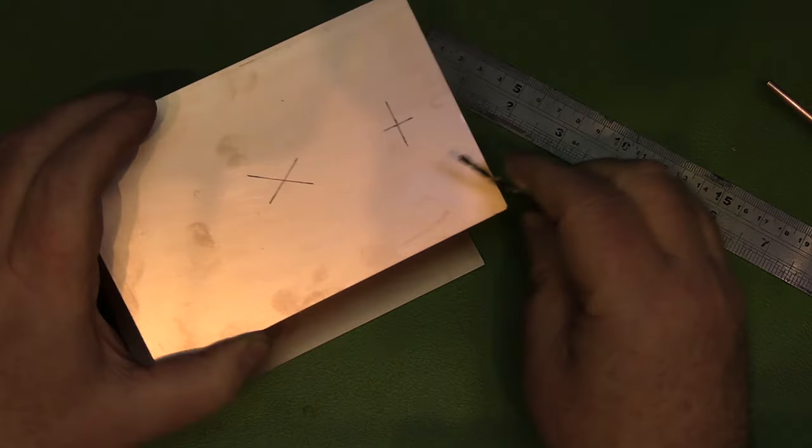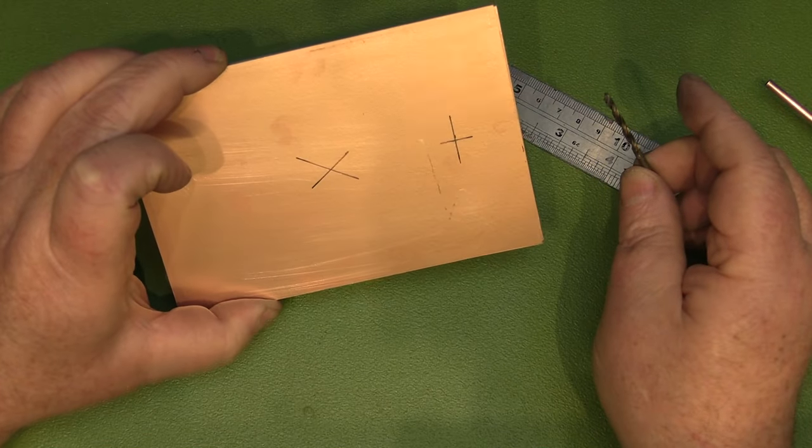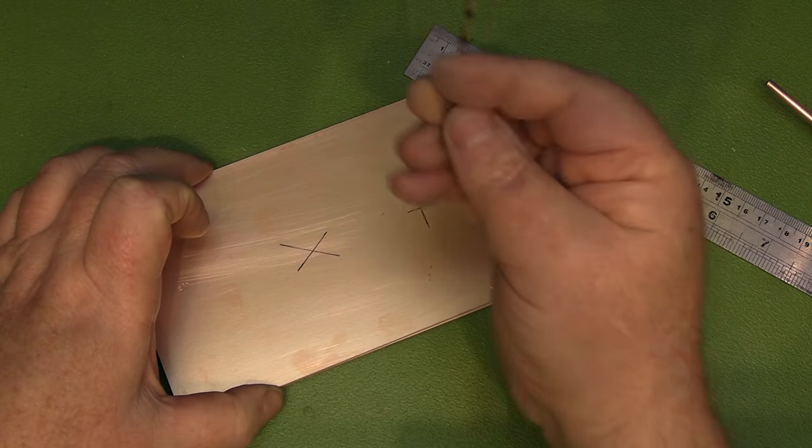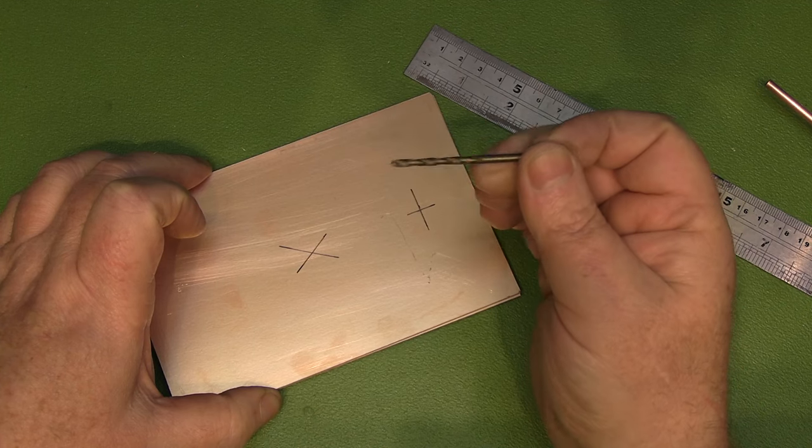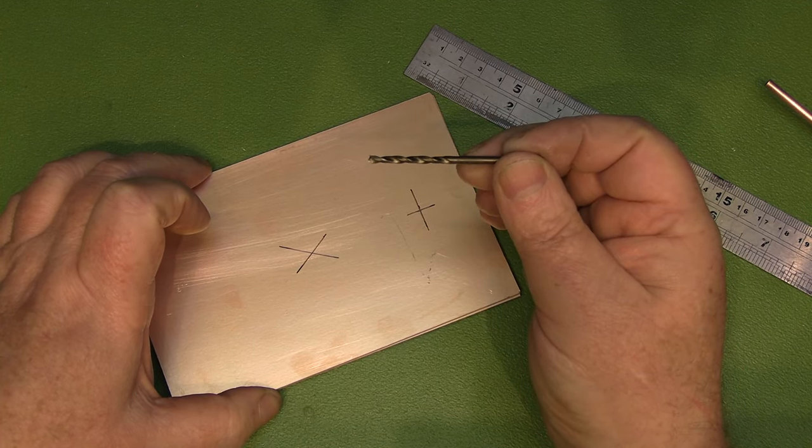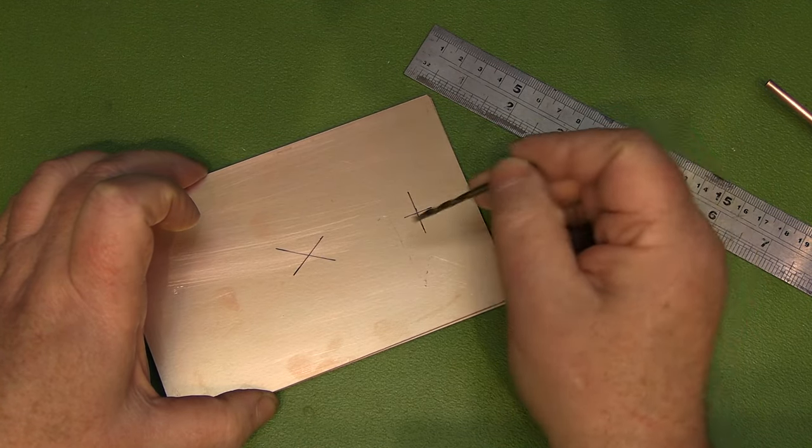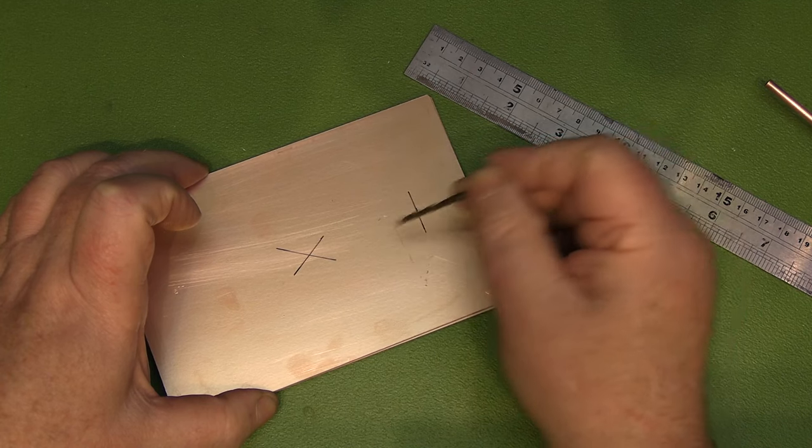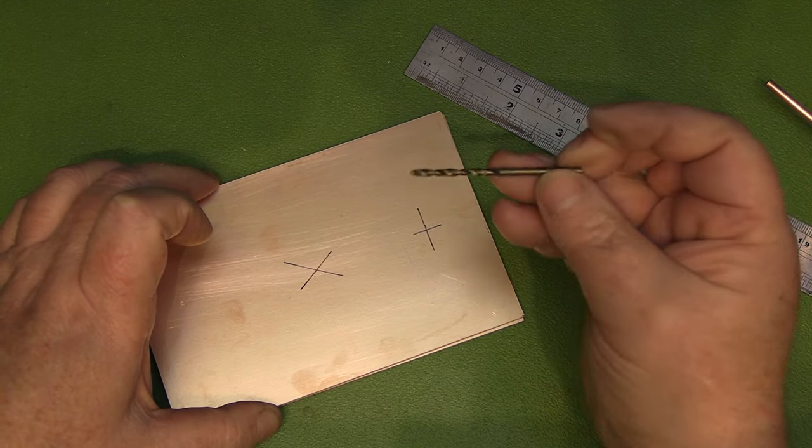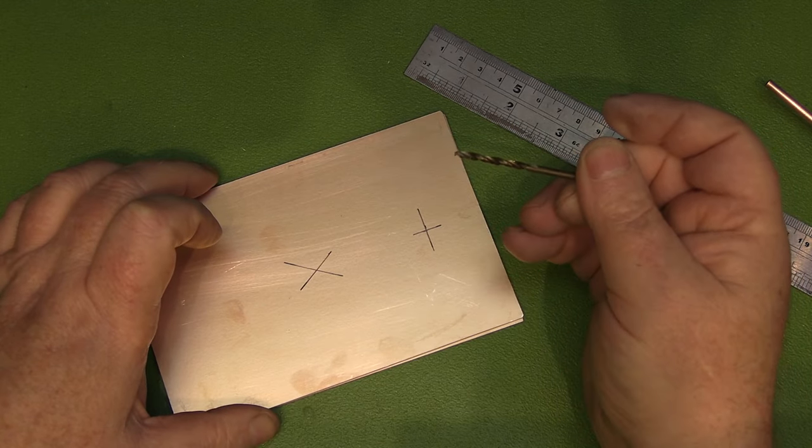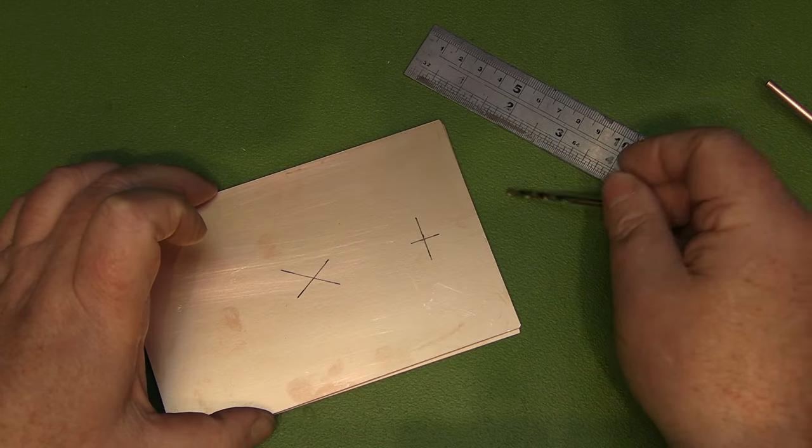So I'm going to drill these two holes. I'm going to hold both of these together with some masking tape and use a slightly smaller drill bit just to mark them out, because some of these holes are going to be a different diameter from the other ones.